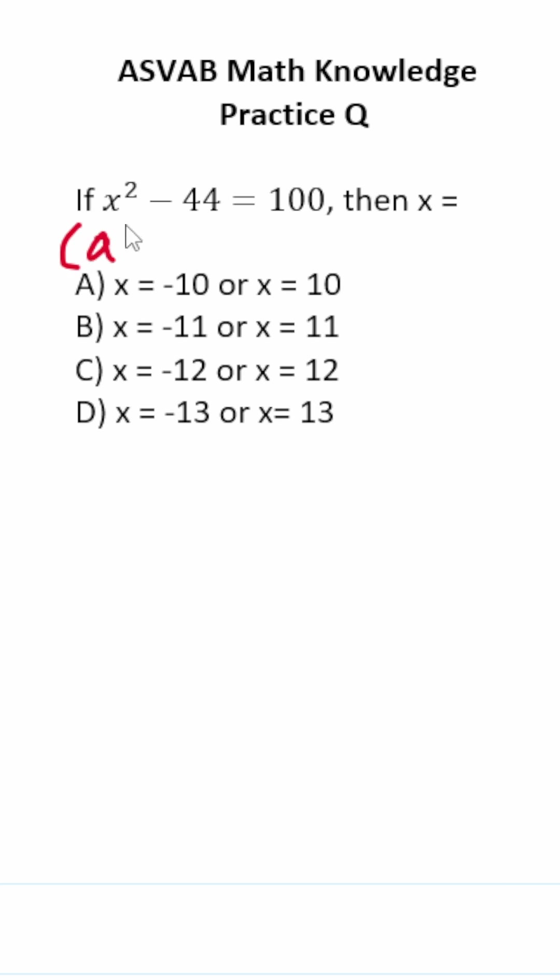Difference of two perfect squares says a squared minus b squared is going to be equal to a minus b times a plus b. Let's take a look at what we have here. We have x squared minus 44 equals 100.